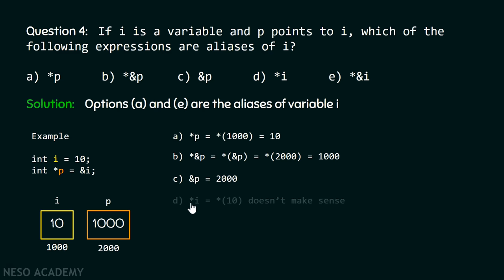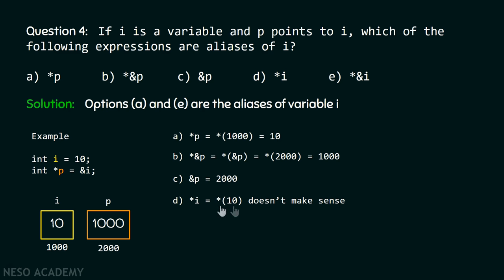For option (d), `*i` means `*(10)` — writing i gives us the content of i which is 10, and then `*(10)` doesn't make sense at all because 10 is not an address. The indirection operator is used to access content at a particular address, but 10 is not an address. Therefore, `*i` is not equal to i and option d is not correct.